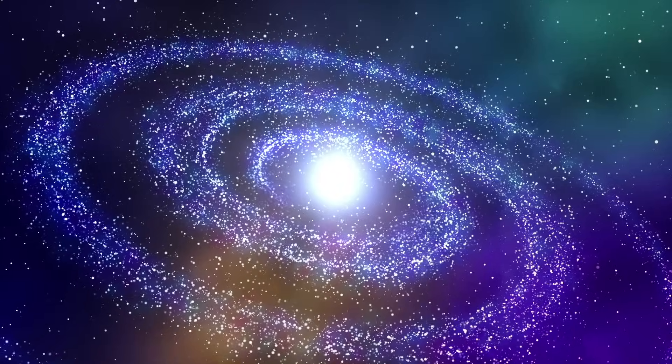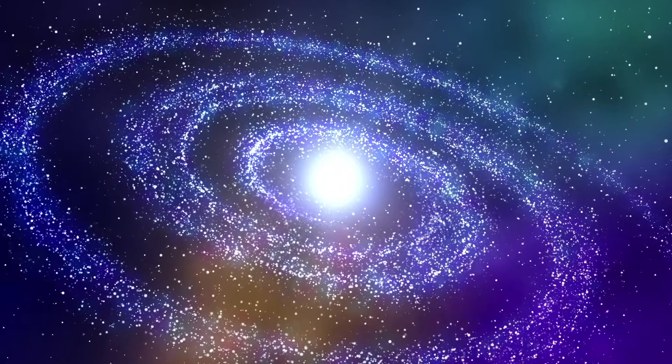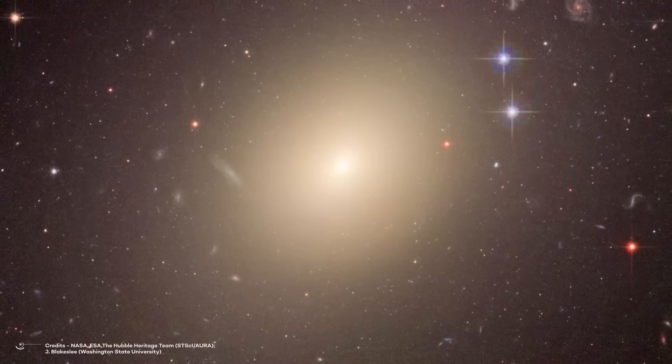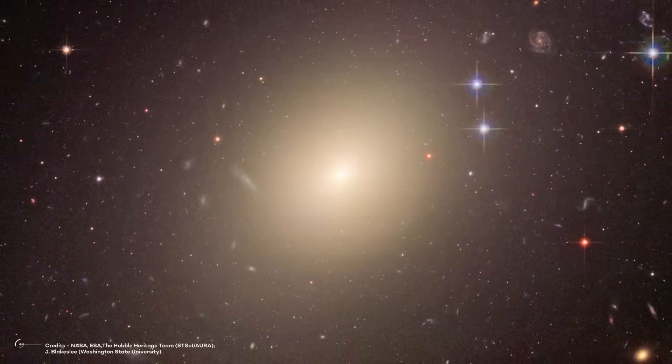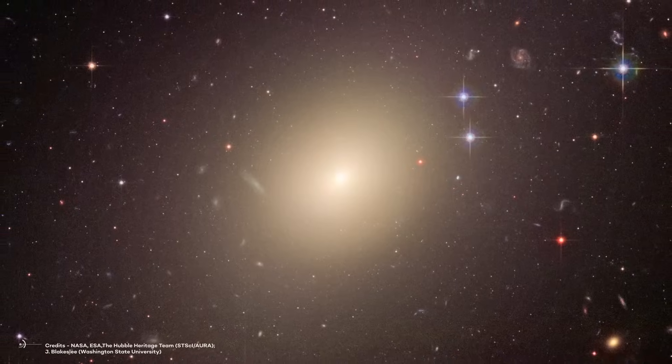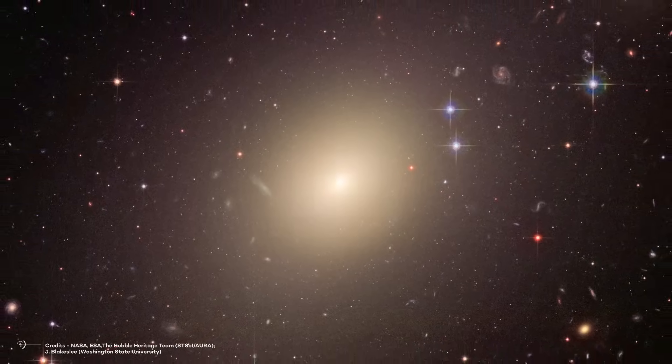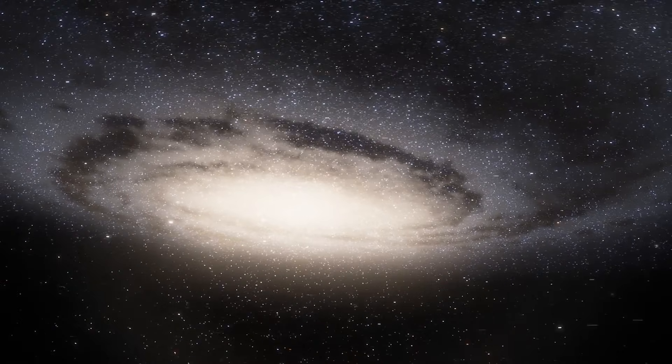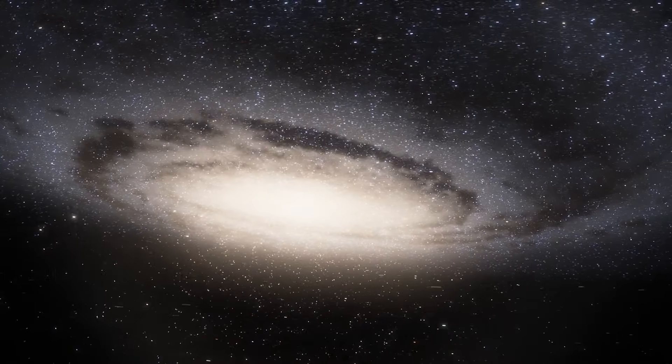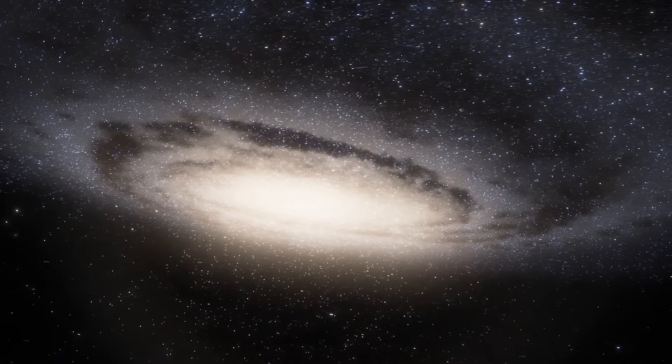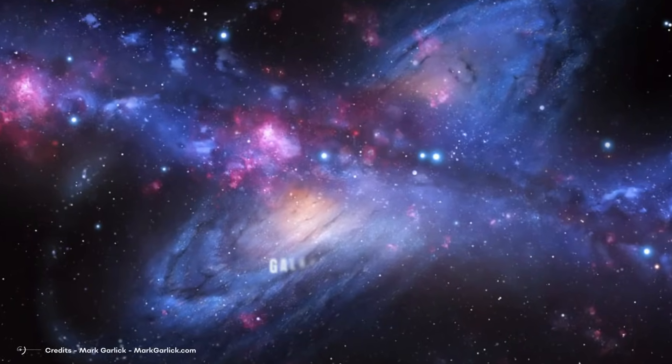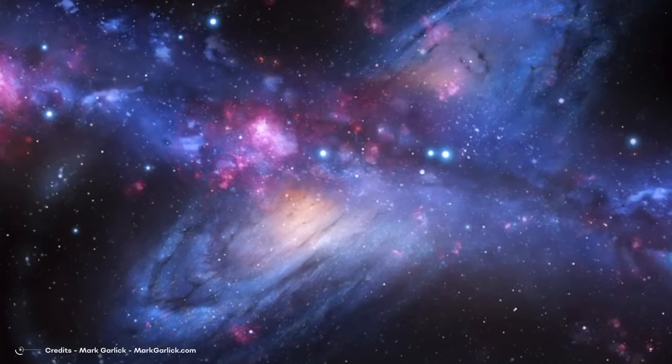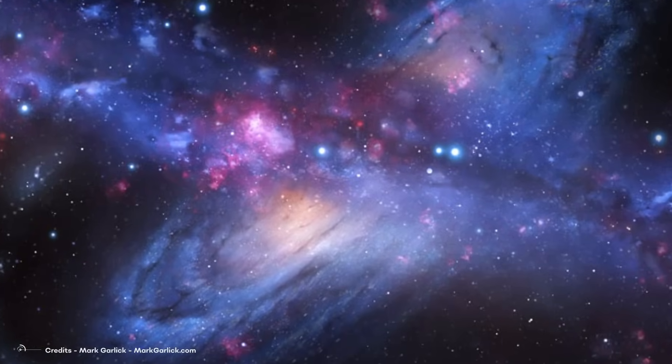Unlike spirals with arms or irregular ones with chaotic shapes, elliptical galaxies appear symmetrical and lack distinctive features. They are composed mostly of older stars and contain little interstellar gas and dust. They come in various sizes, from small to supergiant, and are often found in the central regions of galaxy clusters. Their formation is linked to processes such as galaxy mergers, where smaller galaxies combine to create a larger, elliptically shaped galaxy.